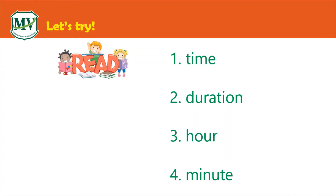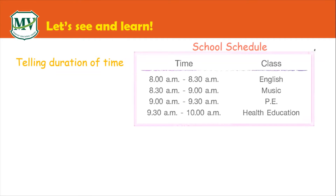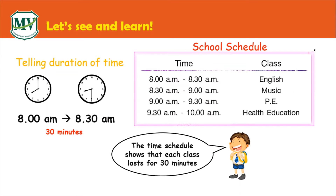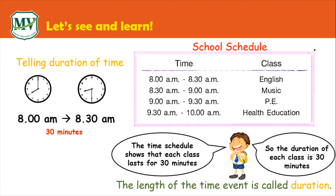Now, try it on your own. Let's see and learn how to tell duration of time. Look at this cool schedule. We have the time and class. From 8 a.m. to 8:30 a.m., the length of time is 30 minutes. The time schedule shows that each class lasts for 30 minutes. The length of a time event is called duration. So, the duration of each class is 30 minutes.